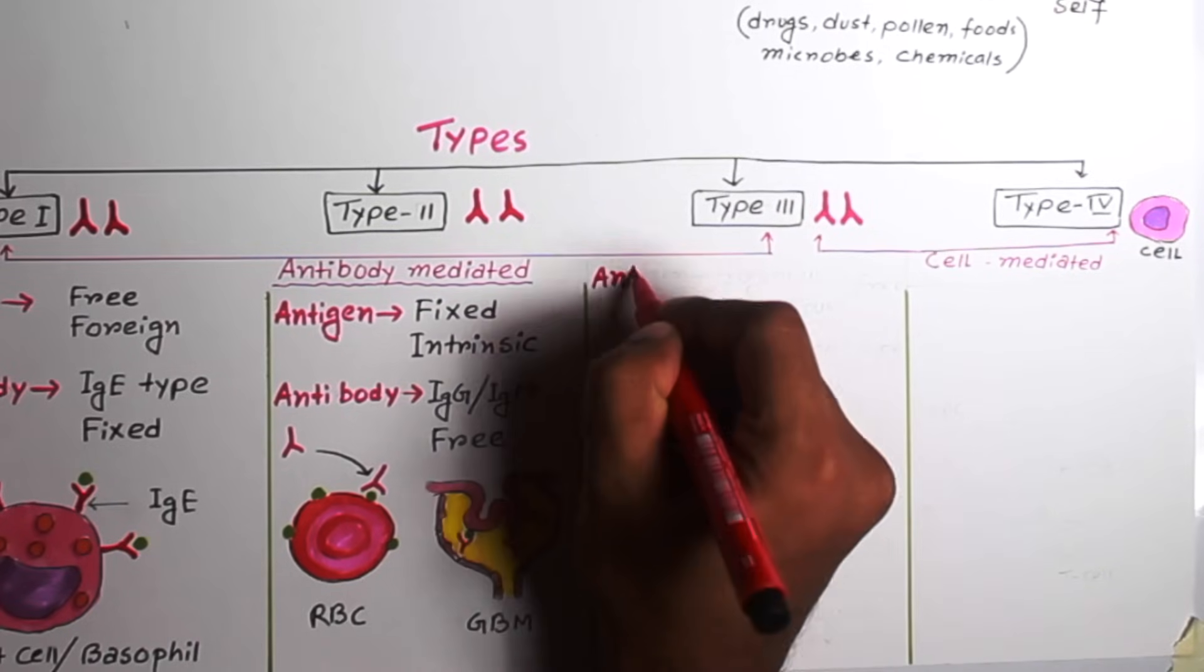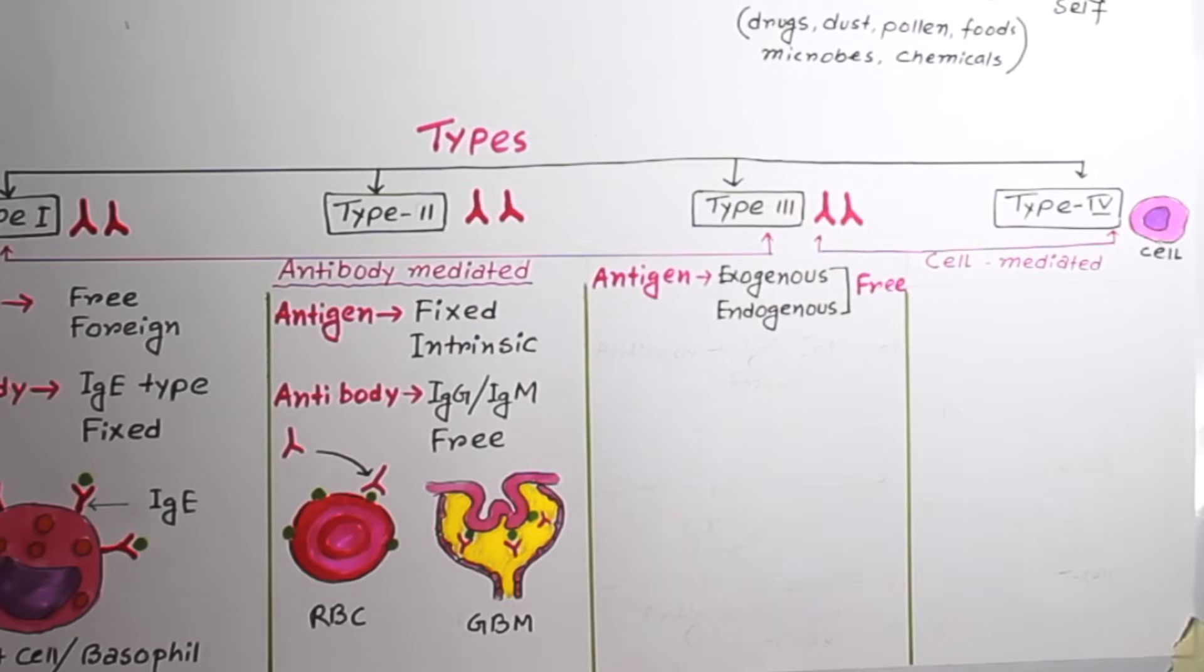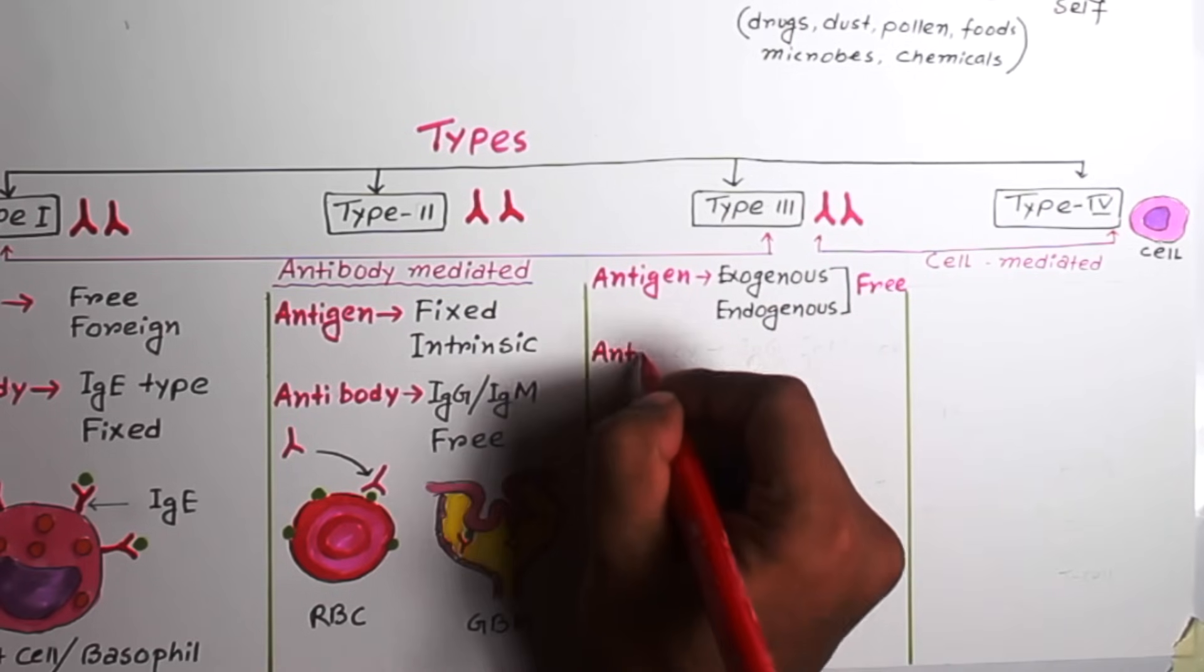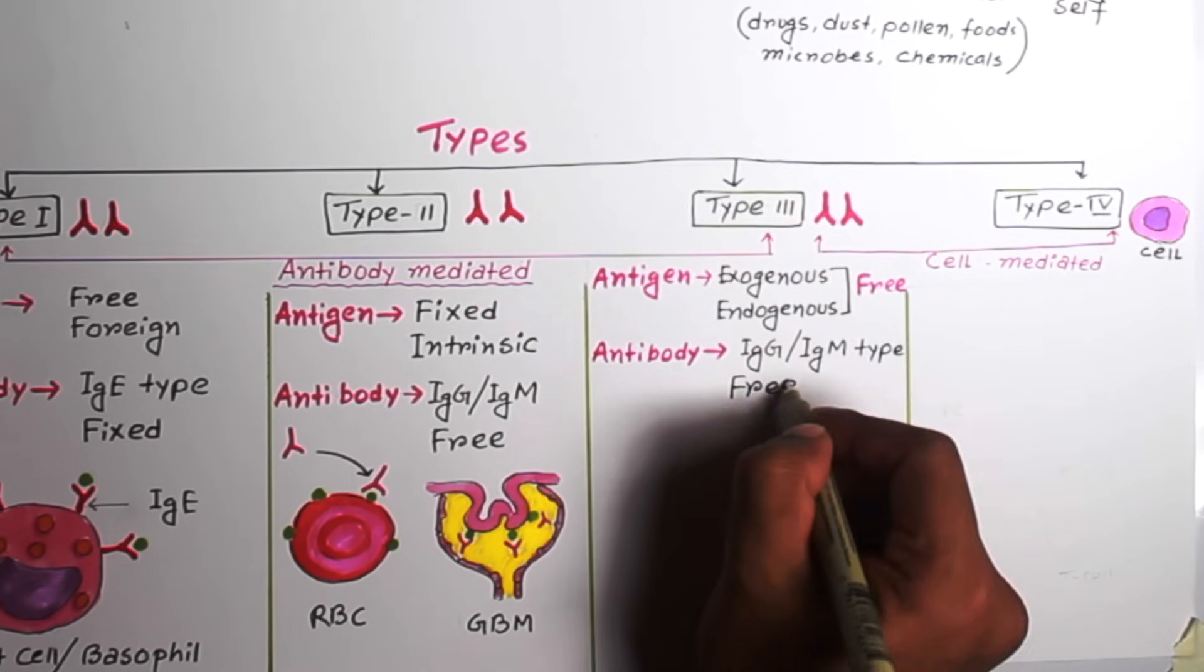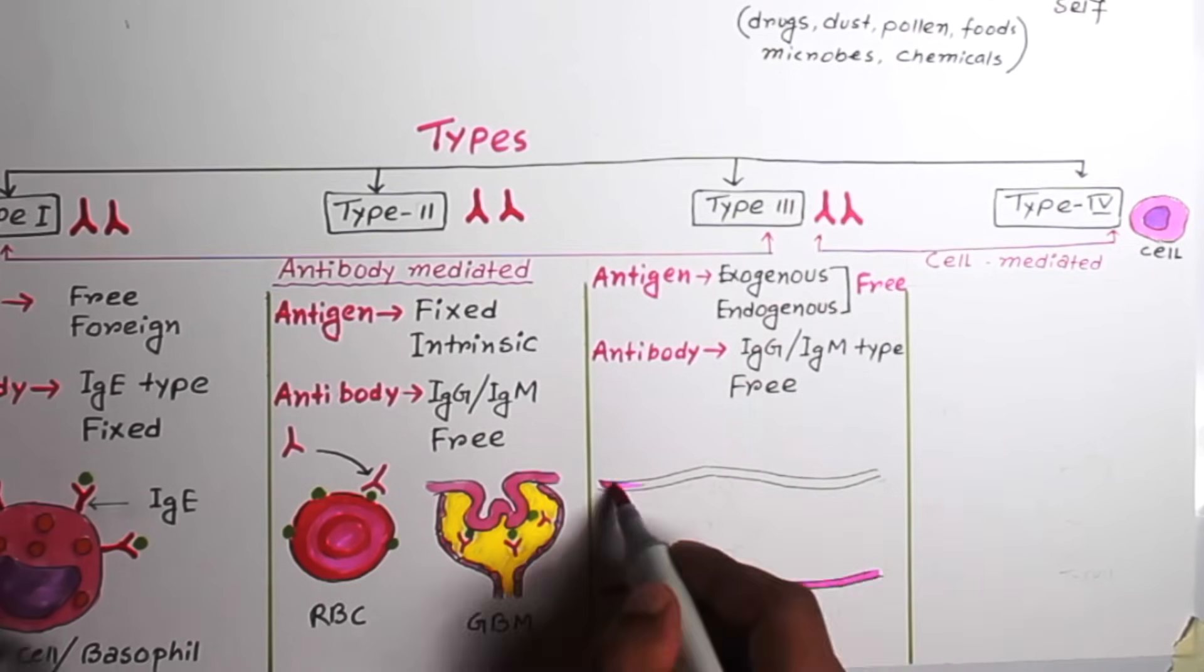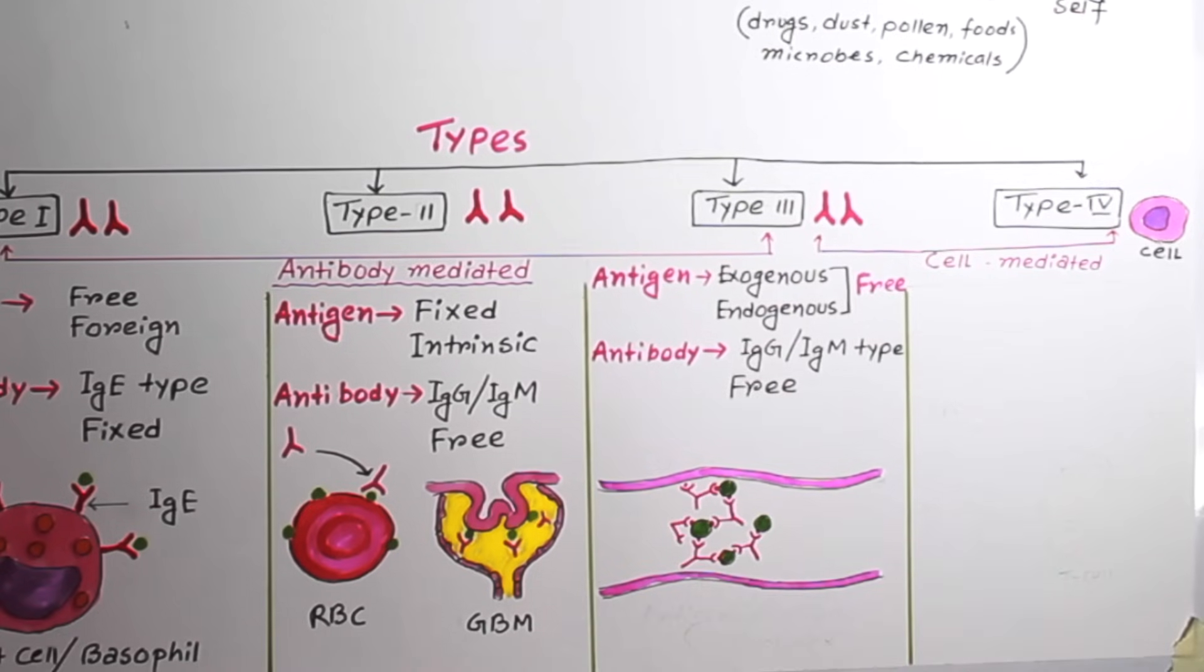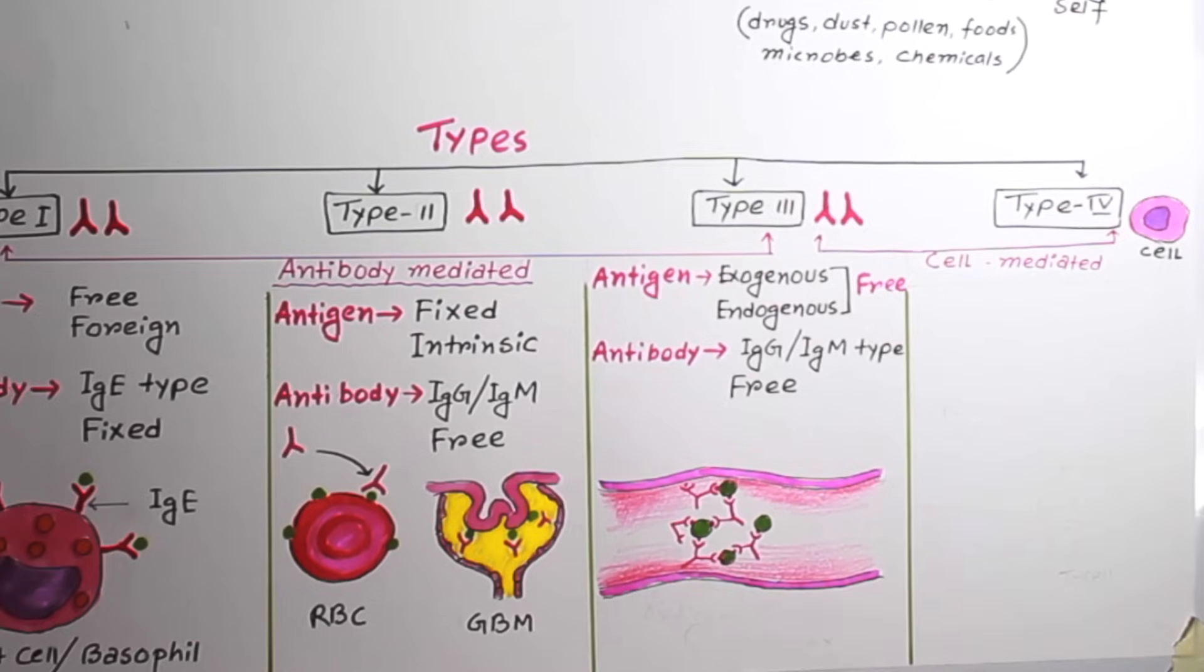Now, come to the Type 3 hypersensitivity reaction. Here antigens may be exogenous or endogenous but they are free. And the antibodies involved here are IgG or IgM type but they are also free. So unlike other two reactions, here both antigen and antibody both are free. So, they react with each other and form immune complexes which circulate in our general circulation and get deposited in various tissue and eventually cause tissue damage. That's why Type 3 hypersensitivity reaction is called immune complex mediated hypersensitivity reaction.